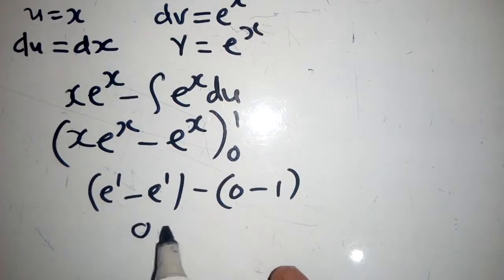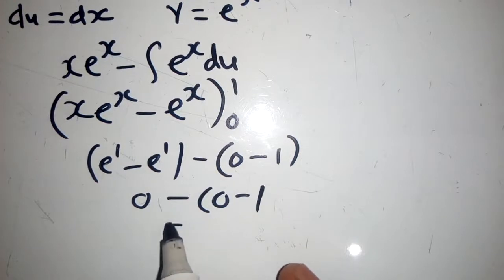At this point we will have zero here minus zero minus one. So if we solve this, it will look like this and our final answer will be equal to one.